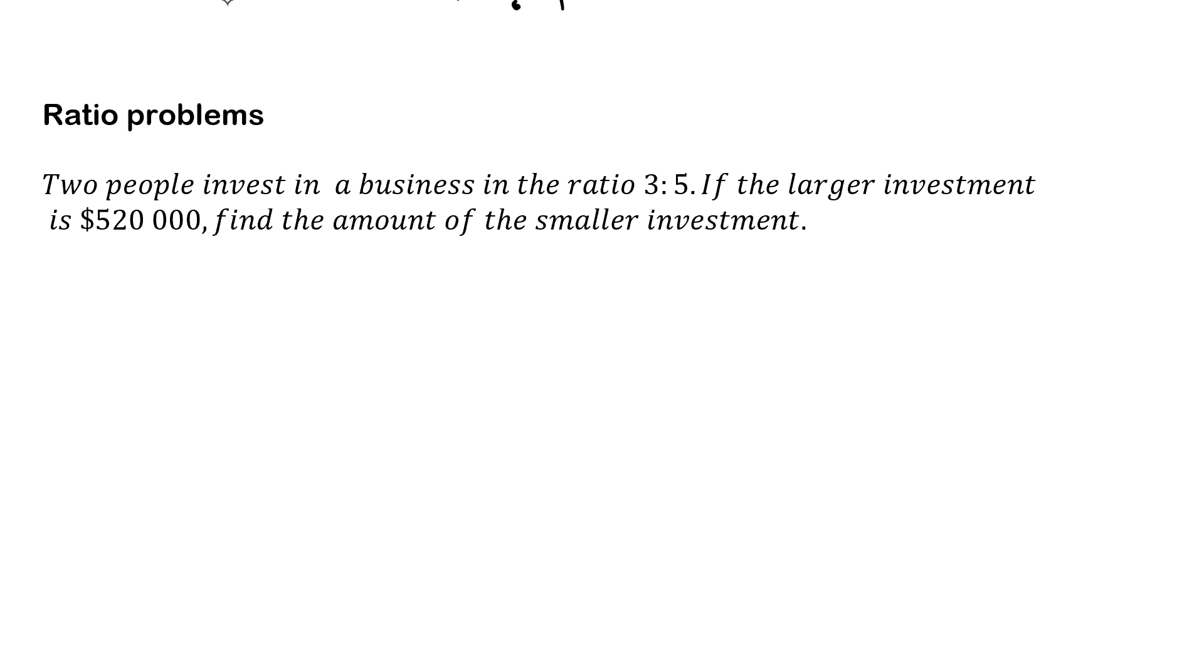So now we're looking at a ratio problem. We have two people who invest in a business in the ratio of 3 to 5, and if the larger investment is $520,000, find the amount of the smaller investment. We're going to use what we call the unitary method here. So to start with, I like to write down my ratio: 3 to 5. We also know that the largest part of the investment was the $520,000. So that's our 5 number. So $520,000 goes over here.